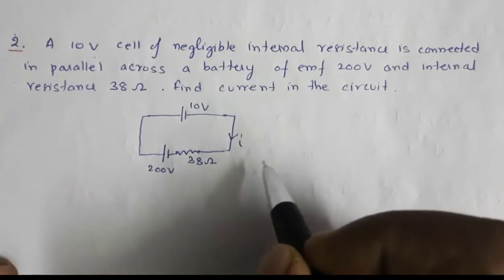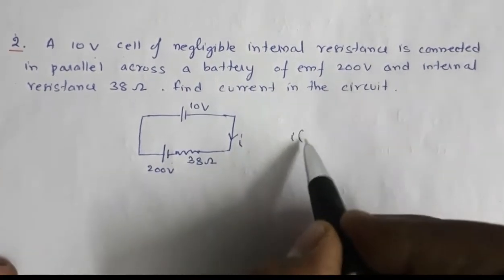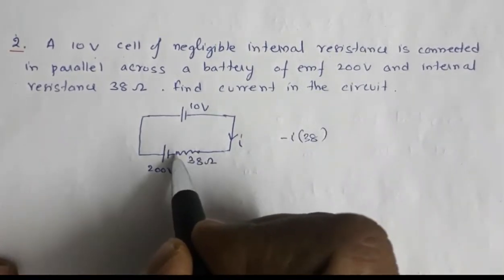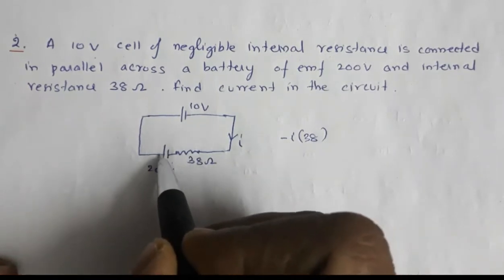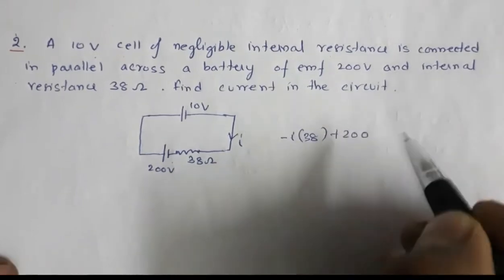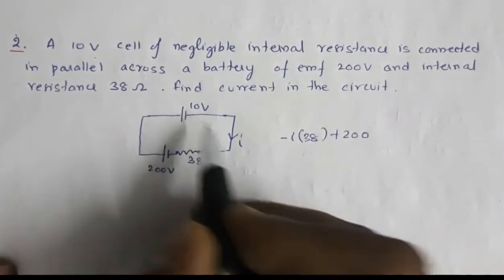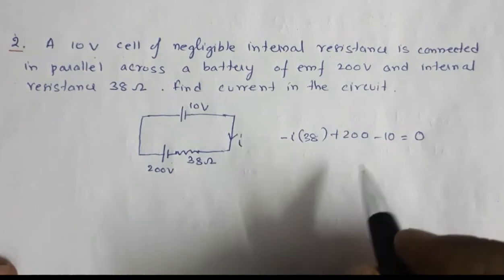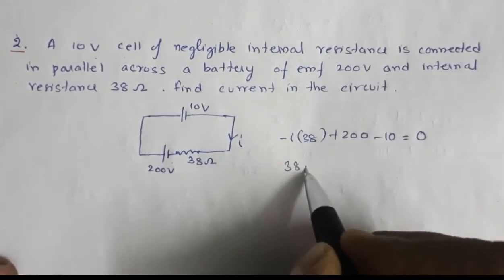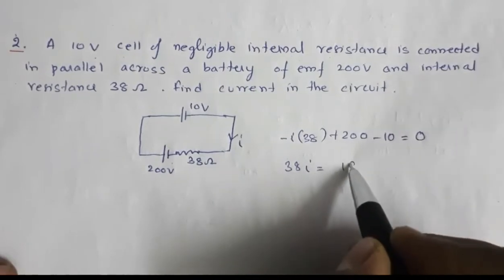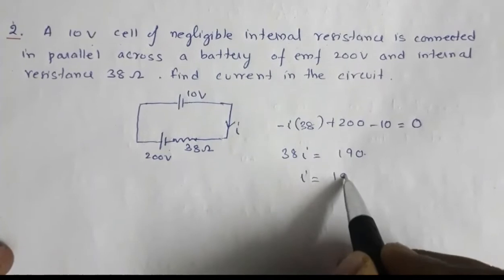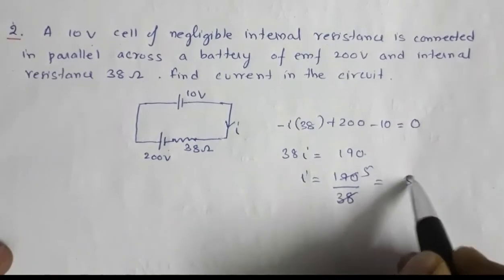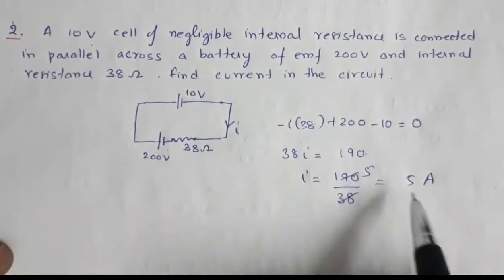Applying Kirchhoff's loop rule: -38I (potential loss through resistance) + 12 (gain from negative to positive terminal of 12V battery) - 10 (loss across 10V cell) = 0. This gives 38I = 190, so I = 190/38 = 5 ampere. The current in the circuit is 5 ampere.